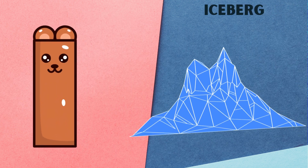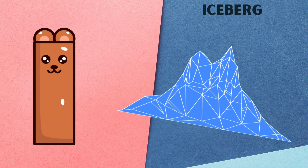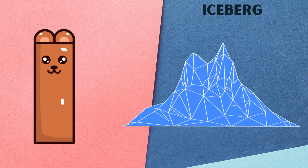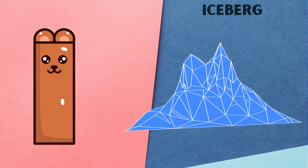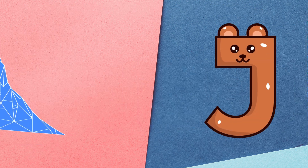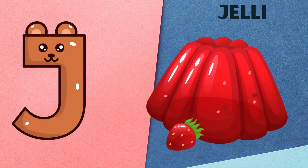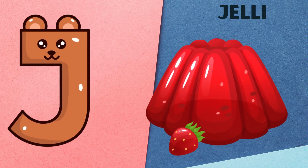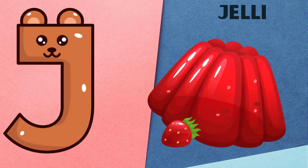I is for iceberg, i, i, iceberg. J is for jelly, j, j, jelly.